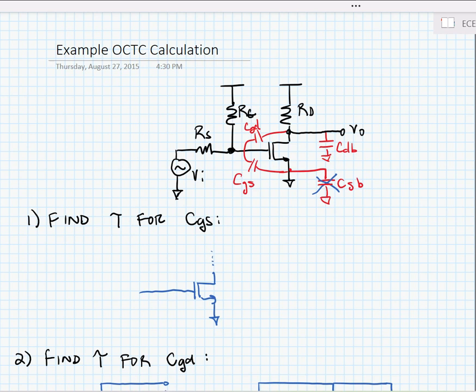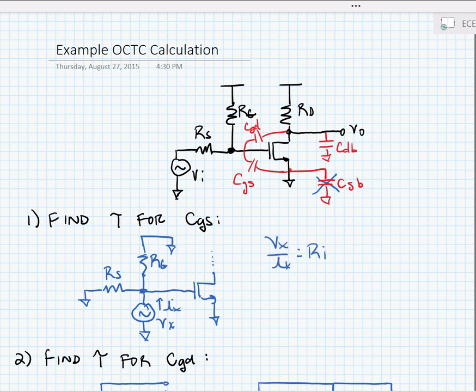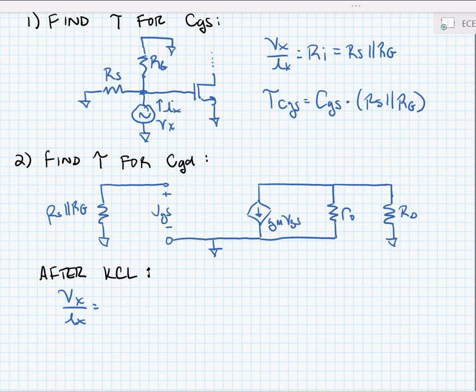Now we're going to find the tau for all the capacitors, but first we're going to start with CGS. So we need to make an equivalent circuit. Alright, following the principles that we discussed before, we're going to short voltage sources and large capacitors. And that means that our circuit for CGS looks something like this. We're going to replace the capacitor CGS with a test voltage source to measure the current that flows through it. We would indeed find VX over IX, which is equal to RS parallel with RG. And we can say that tau CGS is equal to CGS times RS in parallel with RG.